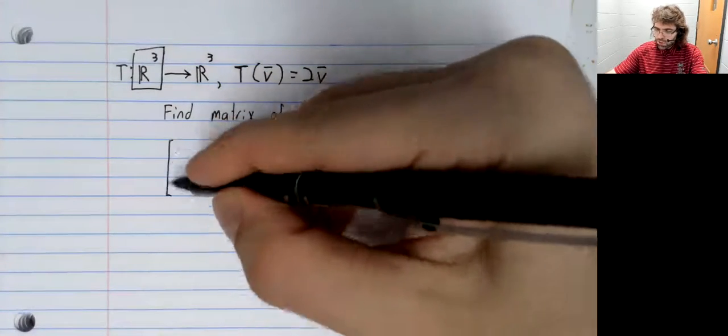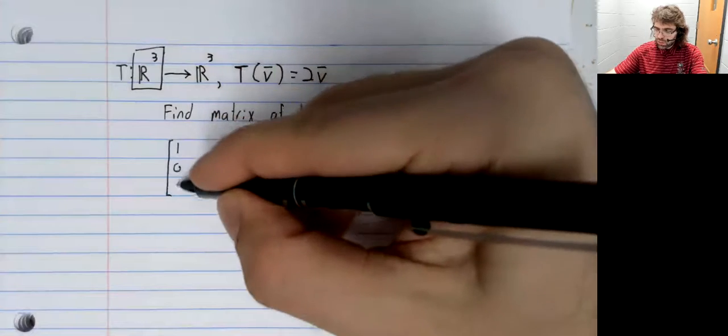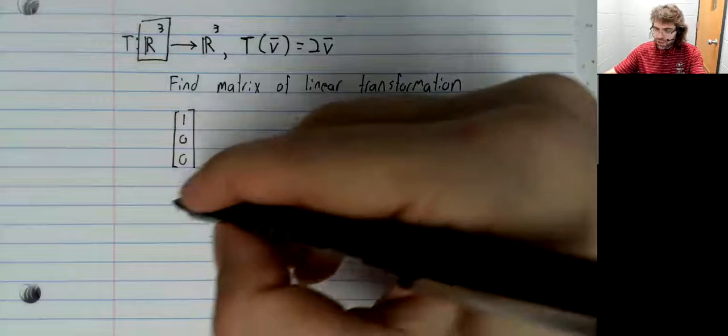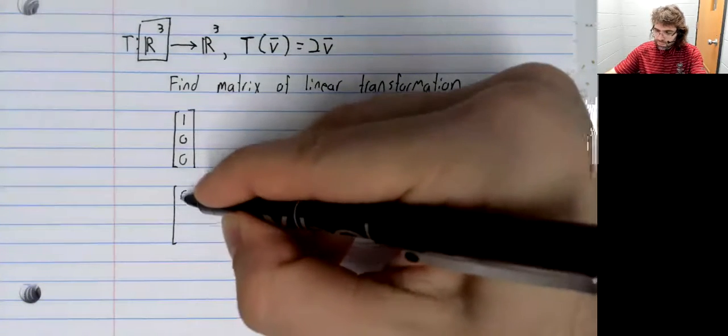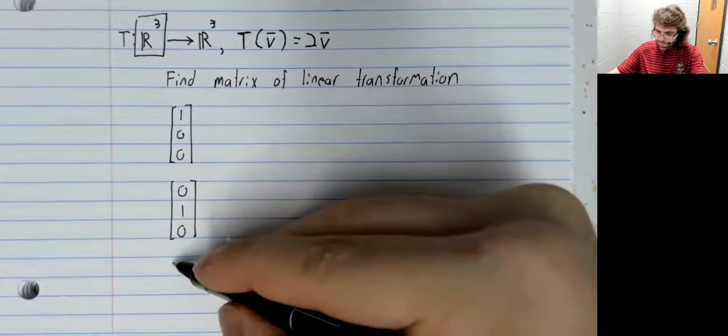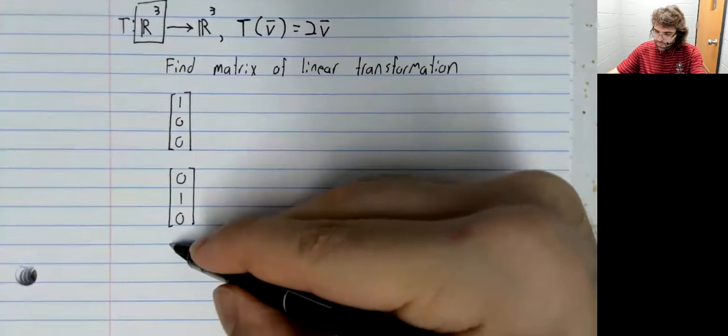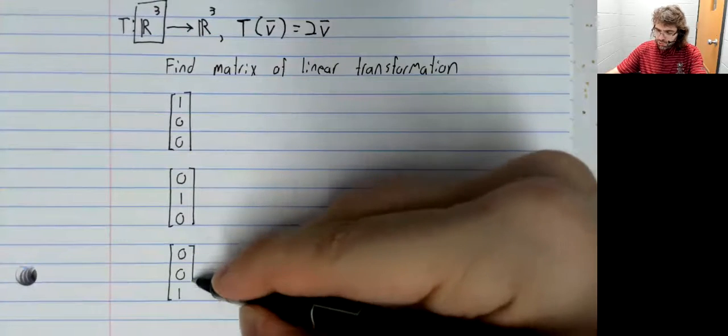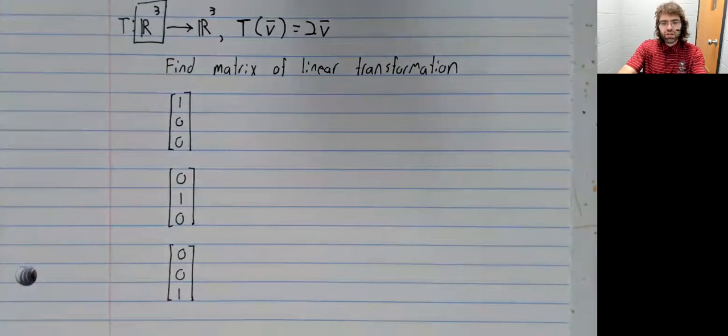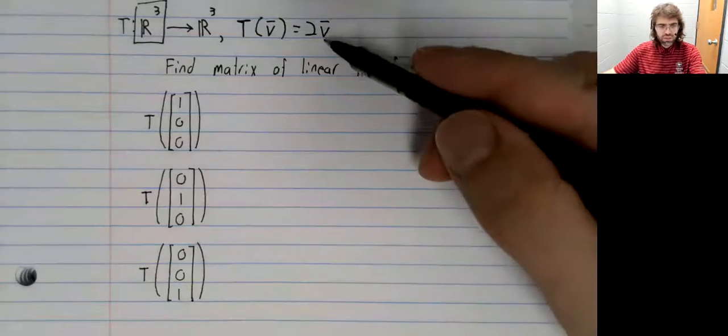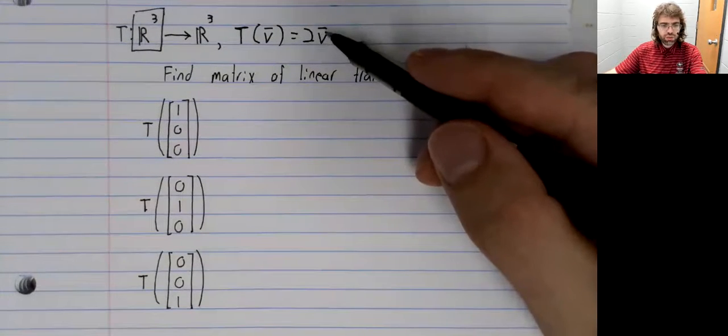So our theorem says we're going to want to look at E1, E2 and E3. We're going to take each of these vectors and apply this linear transformation to it.